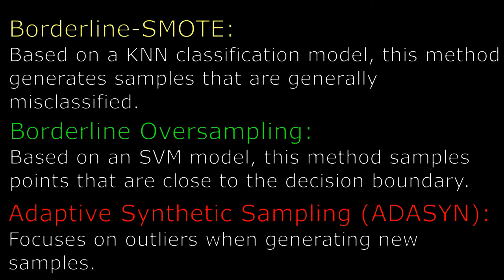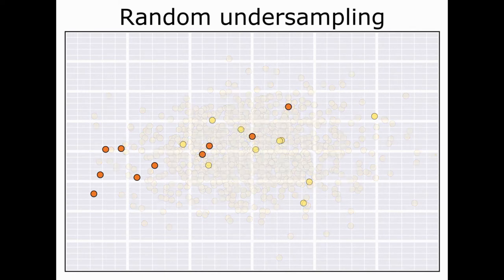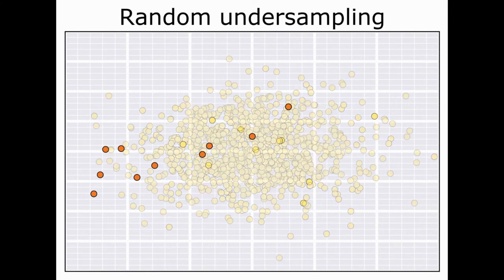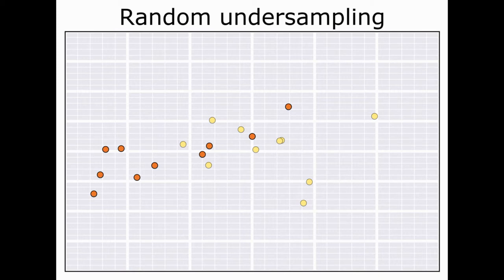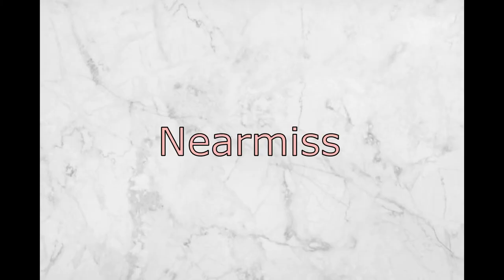Similar to random oversampling, the random undersampling method involves sampling from the over-represented class and retrieving the same number of observations as the minority class. This could potentially remove key characteristics of your dataset. It's another naive approach, but it is relatively easy to communicate to others.